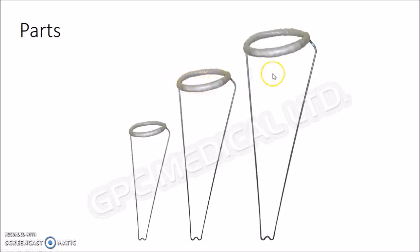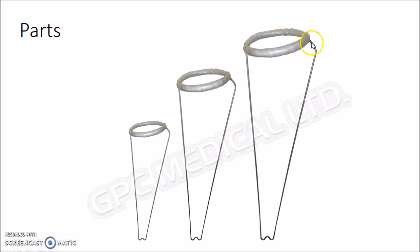A Thomas splint has a ring and two sidebars. The ring and the inner sidebar are at an angle of 120 degrees. The outer sidebar has a curve, which is to accommodate the greater trochanter.